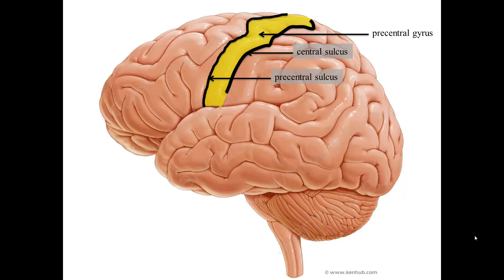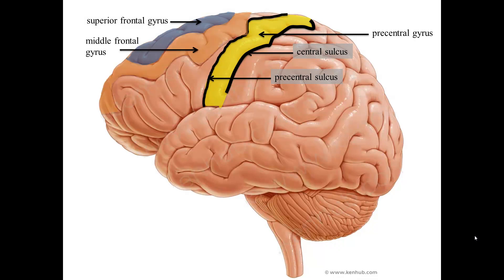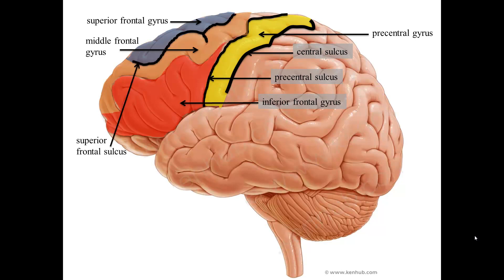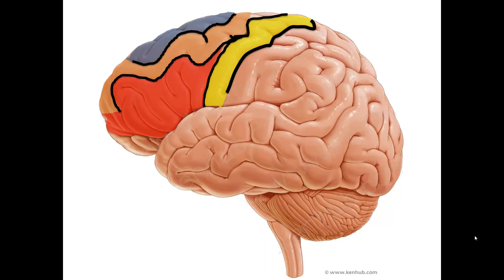The rest of the frontal lobe is divided into the superior frontal gyrus, middle frontal gyrus, and inferior frontal gyrus, which are divided from each other by the superior frontal sulcus and the inferior frontal sulcus. Here is a look at the frontal lobe again without labels. We will build on this image as we look at the other lobes.